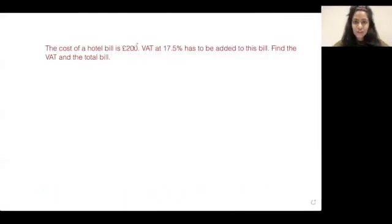Okay let's try question one. The cost of a hotel bill is £200. VAT at 17.5% has to be added to this bill. Find the VAT and the total bill. The first thing I would do here is underline the key information. We know the cost of a hotel bill is £200, VAT is added at 17.5%, and that has to be added to the bill. We need to find the VAT and the total bill.